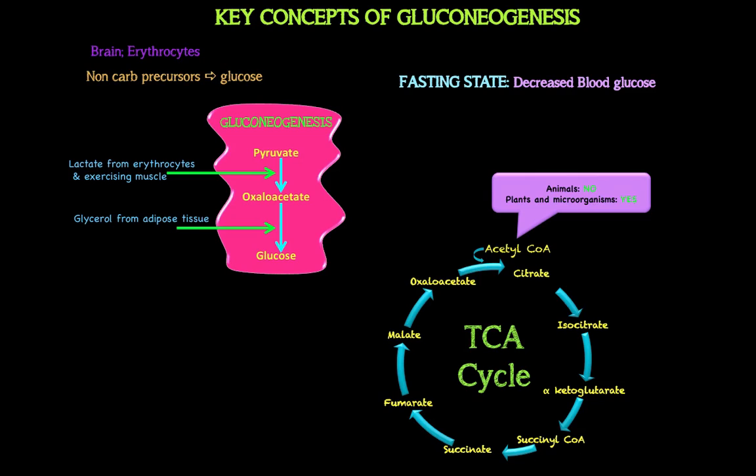So why show the TCA cycle? Because it relates to the third common glucogenic precursor. To recap: we have lactate, glycerol, and the third one — glucogenic amino acids. Glucogenic amino acids give rise to glucose when metabolized. Any amino acid that can be broken down to give an intermediate of the TCA cycle, which eventually gives oxaloacetate, is termed a glucogenic amino acid. Some glucogenic amino acids when catabolized can also yield pyruvate.